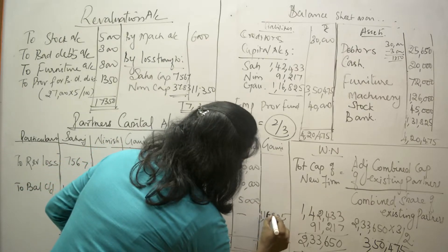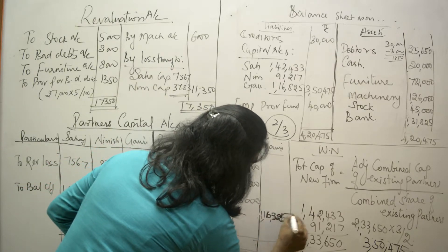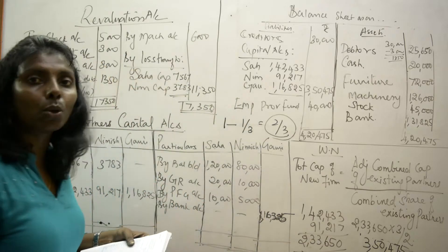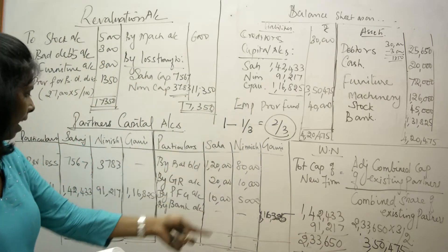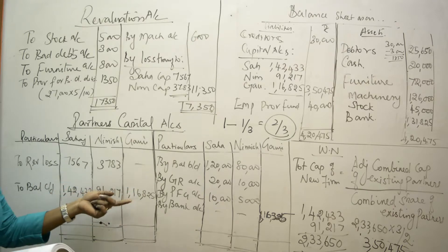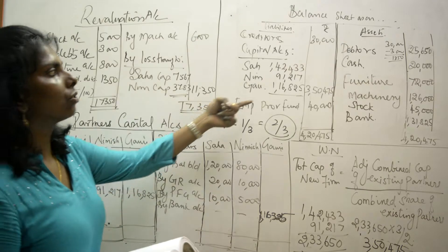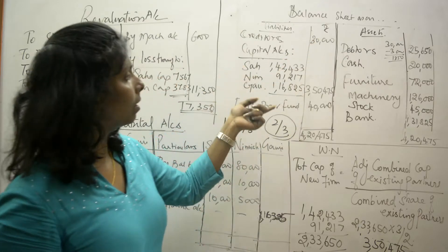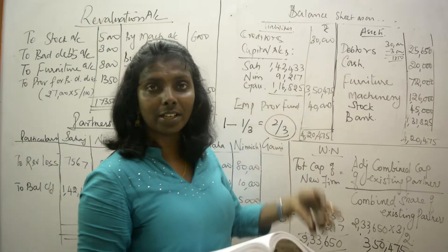One-third of 3,50,475 gives 1,16,825. I fill that amount in the capital account. After filling that, I do the balancing figure for all three partners, which is then taken to the balance sheet. The rest of the items are filled as there are no further adjustments.